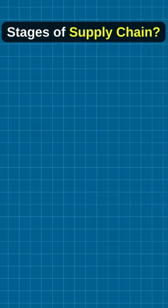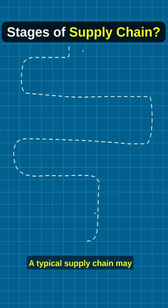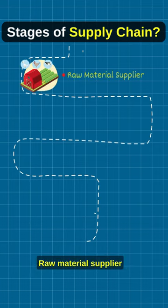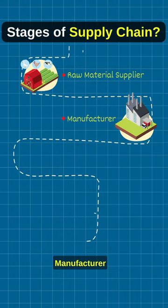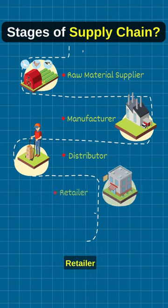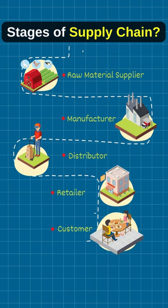What are the different stages of a supply chain? A typical supply chain may involve a variety of stages, including the following: raw material supplier, manufacturer, distributor, retailer, and customer.